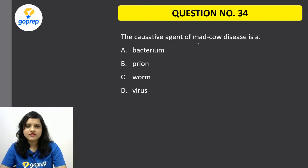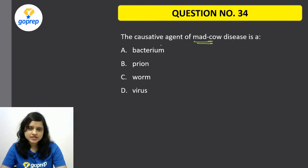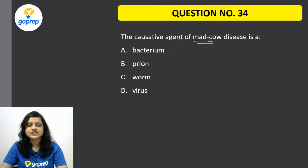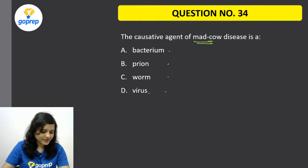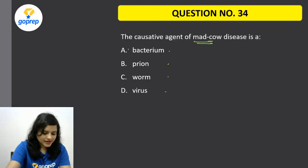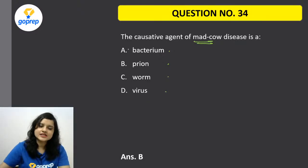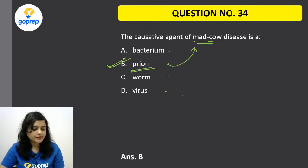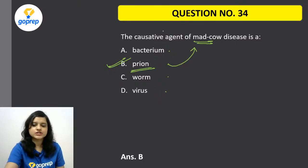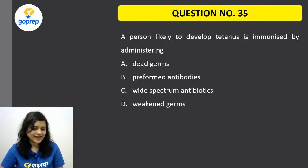The causative agent of mad cow disease — is it bacteria, prion, worm, or virus? The correct option is prion. Mad cow disease is caused by a prion. Remember this.